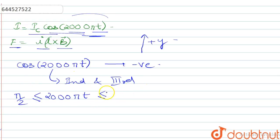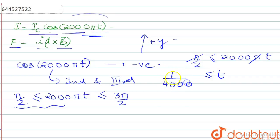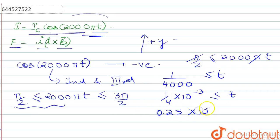Taking the first inequality: π/2 ≤ 2000πt, the π cancels and we get t ≥ 1/(2×4000) which equals 1/4 × 10⁻³, which we can write as 0.25 × 10⁻³ seconds.